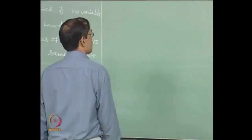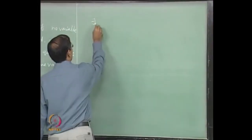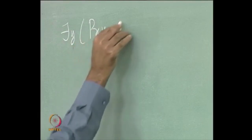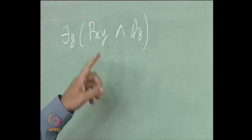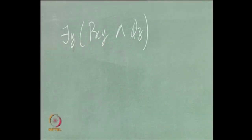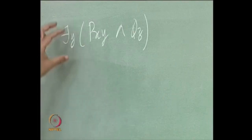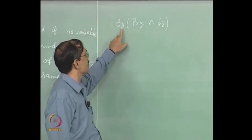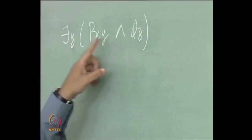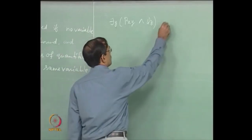Let us see how to rectify with an example. There is: for all y, p(x,y) and q(z). Is it rectified? There are three variables occurring in this formula: x, y, and z. X is a free variable and x is not bound. There is only one occurrence of the quantifier, which uses y. That y is bound here and nowhere free. Z is a free variable. This is already rectified.